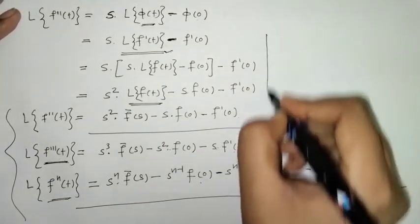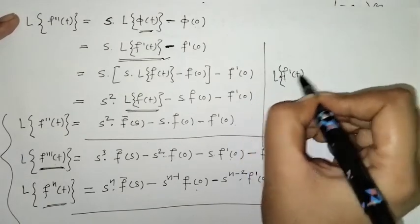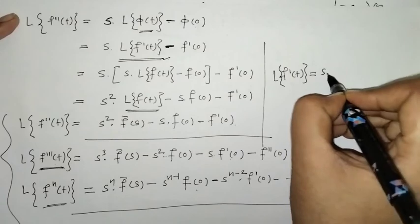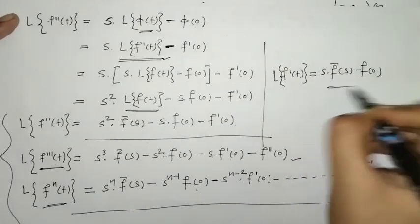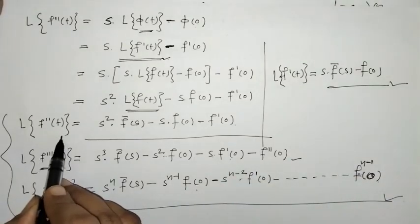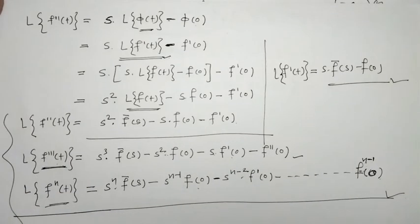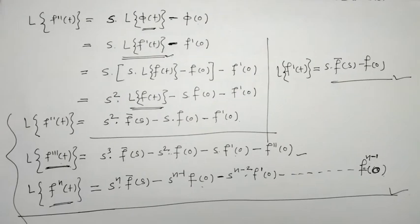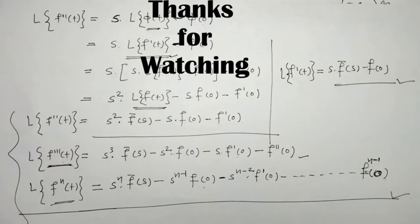So to summarize: we have found the Laplace transform of f-dash of t as s·f-bar of s minus f of 0, the Laplace of f-double-dash of t, and written down all these values. In this way we have found the Laplace transform of derivatives. That's it for now — see you in the next video. Thank you. Keep watching.